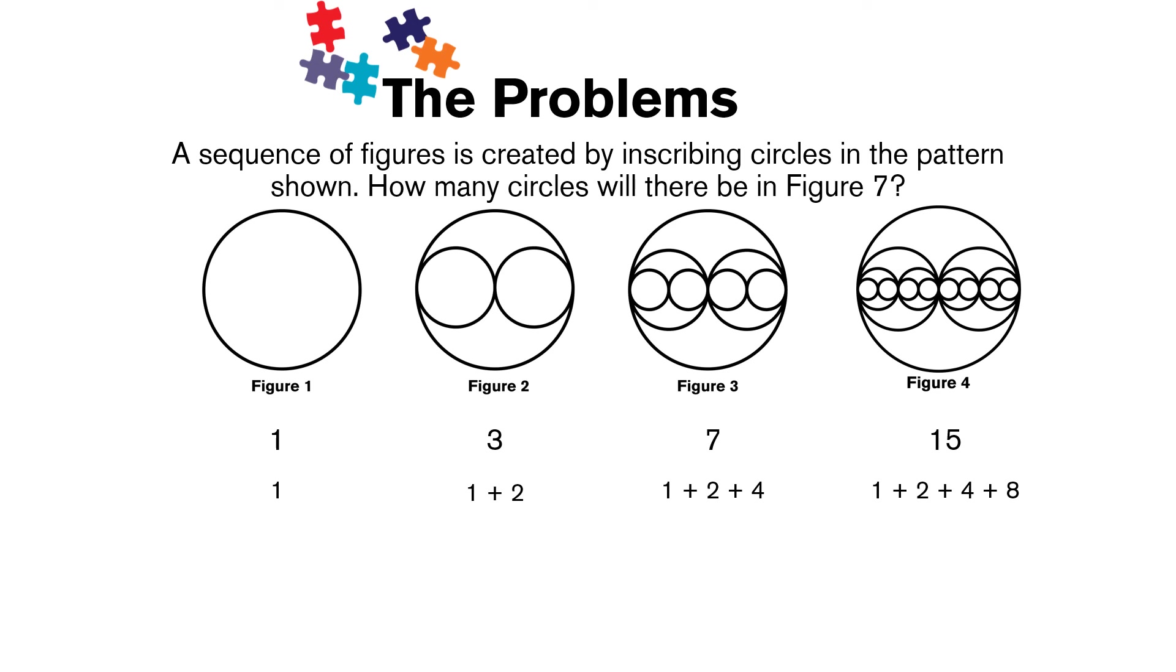You might notice that in this pattern, we are basically adding 2 times the number that we previously added. When we move to figure 2, we added 2, which is 2 times 1. When we move to figure 3, we added 4, which is 2 times 2. When we move to figure 4, we added 8, which is 2 times 4. So it's a continuous addition of multiples of 2 or powers of 2.